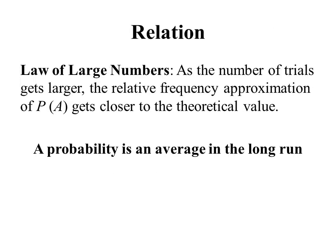Let's talk about a law that relates these two approaches — it's called the law of large numbers. This says that as the number of trials gets larger, the relative frequency approximation of the probability of A gets closer to the theoretical value. So the more trials you do, the better your approximation is going to be. This gives us a way of interpreting what a probability means: it's an average in the long run. Probability doesn't tell us what's going to happen on any one trial, but it will tell us what will happen in the long run.